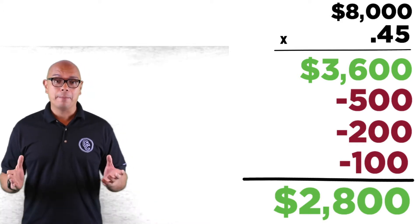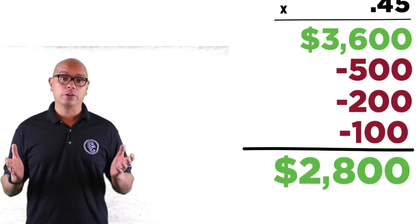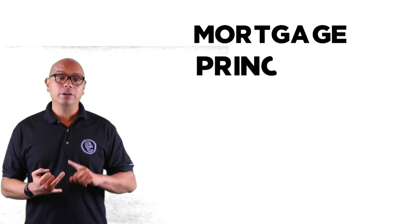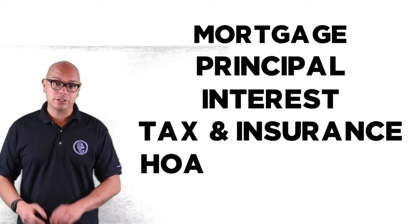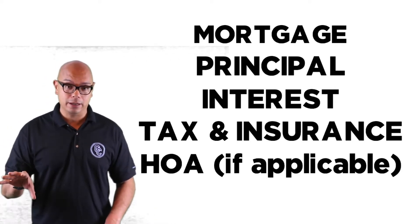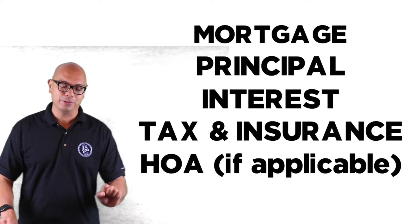So that is the amount that they can use for their total house payment. That's the mortgage principal, interest, taxes, and insurance, and HOA if there is an HOA in that home loan.